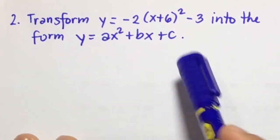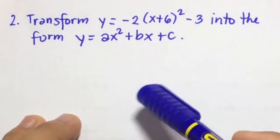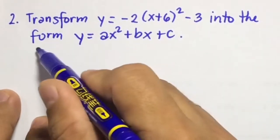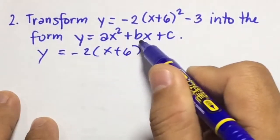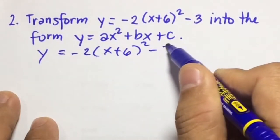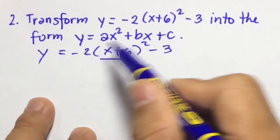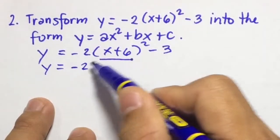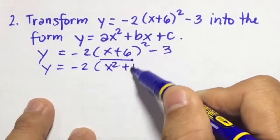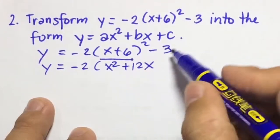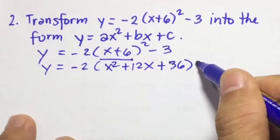Number 2: transform y equals negative 2 times the quantity of x plus 6 squared minus 3 into the form y equals ax squared plus bx plus c. So we write first y equals negative 2 times the quantity of x plus 6 squared minus 3. Then we operate x plus 6 squared first. x plus 6 squared is equivalent to x squared, then x times 6 times 2 gives 12x, and the square of 6 is 36, so plus 36. Then minus 3.